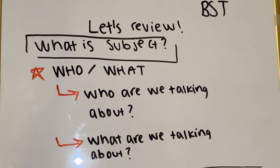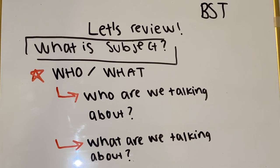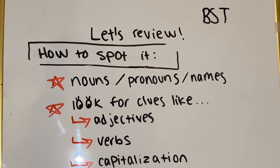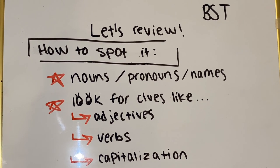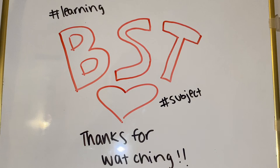So let's review. What is subject? Subject is the who or what that is being discussed in a sentence. You can always find it by asking yourself, who are we talking about? How can we spot subject? You can always look for nouns, pronouns, or names. But if it's harder than that, look for clues like adjectives that describe a noun, a verb which is the action being performed, or capitalization which indicates a proper noun. Thank you for watching. If you enjoyed this video, please make sure to check out the other videos on our channel.